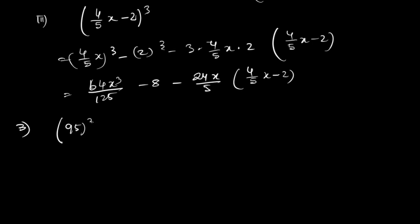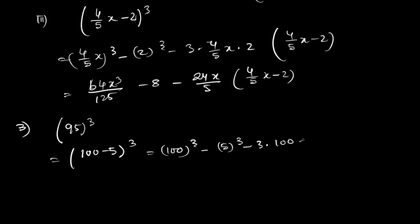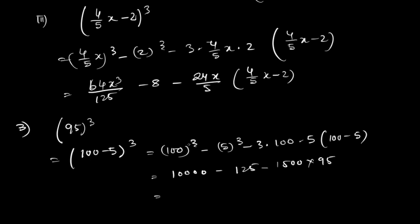Now the question is to find 95³. Just like we handled 99² and similar problems before, we write 95 as (100 − 5)³ and apply the formula: 100³ − 5³ − 3·100·5·(100 − 5), which gives 1,000,000 − 125 − 1500·95. Calculating gives the final answer: 857,375.